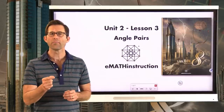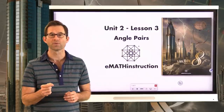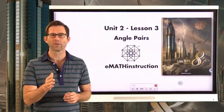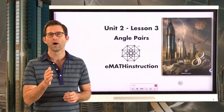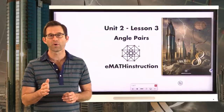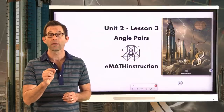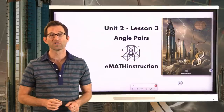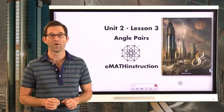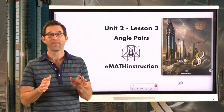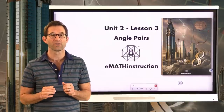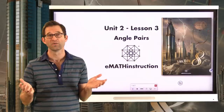We saw how to measure angles in terms of degrees and how to classify angles as acute, obtuse, 90, or straight, depending on their degree measure. Finally, we got a little bit of algebraic modeling going on that helped us figure out the sizes of angles or solve for variables.